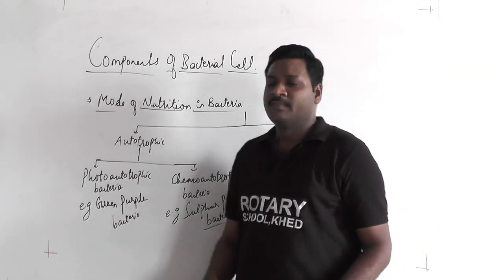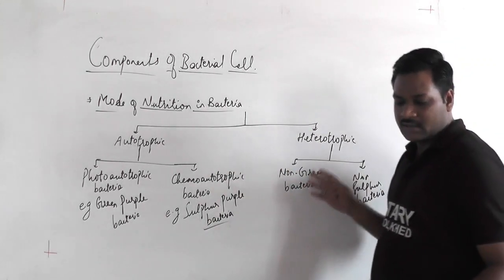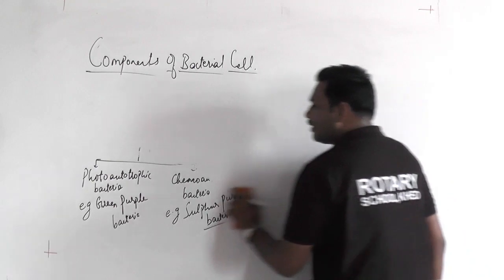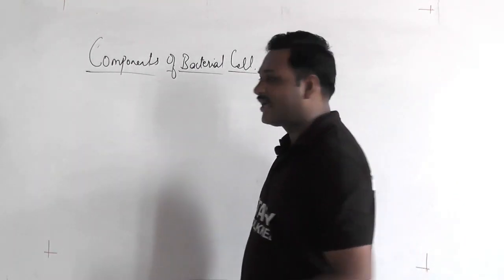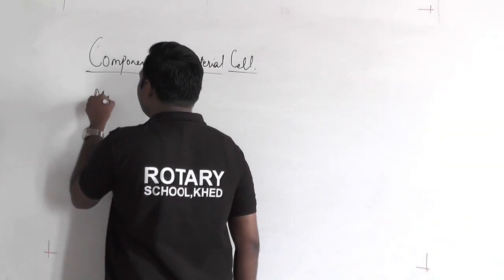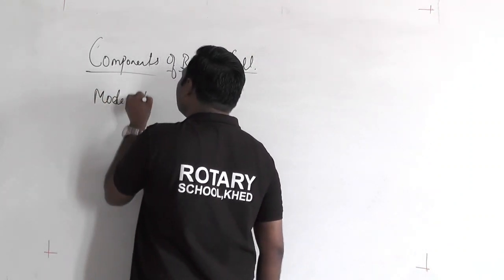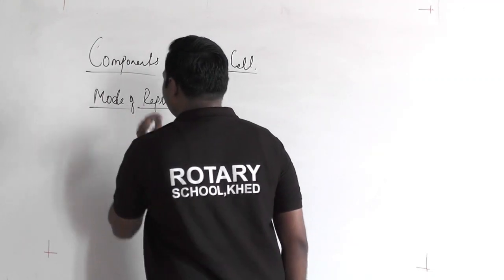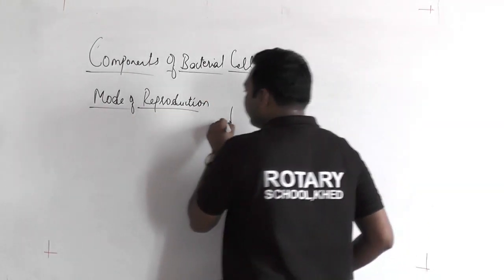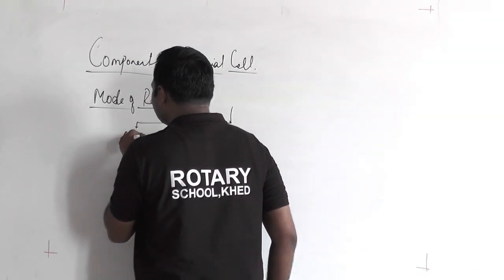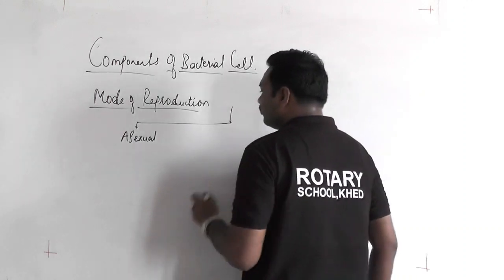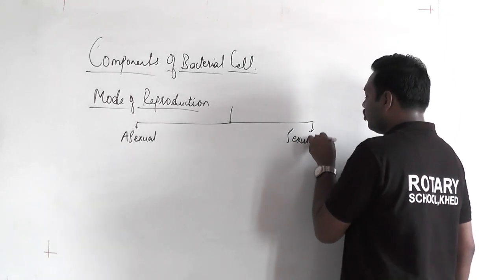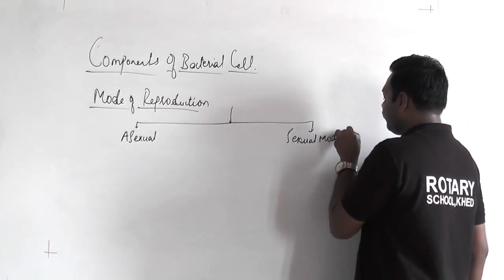There are different functions of the bacterial cell. This was about the mode of nutrition. Now let us talk about the mode of reproduction. In case of bacteria, we see different modes of reproduction. Basically, two modes of reproduction take place: the asexual mode and the sexual mode of reproduction.